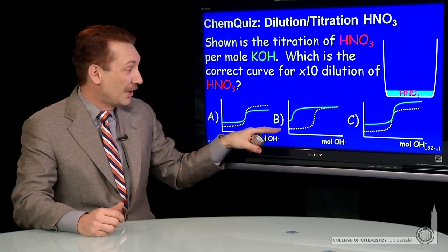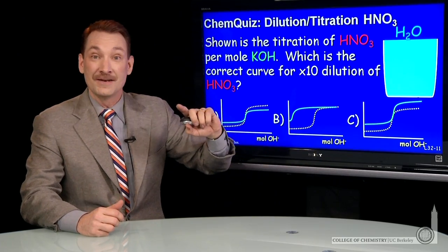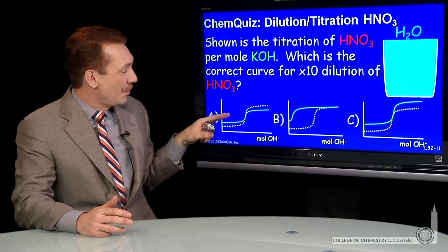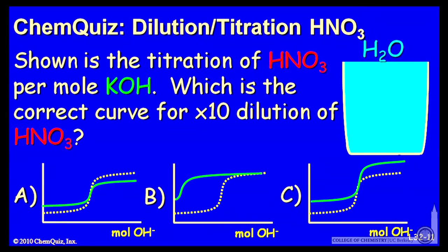So shown here in yellow is the initial titration. I'm going to dilute by a factor of 10, just add water, titrate again. What will the new titration curve look like? A, B, or C? Think about that for a minute and make a selection.